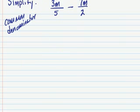In other words, I'm going to have to multiply 2 times this 5, and I'm going to have to multiply 5 times this 2. And when I do that, I'll get a common denominator of 10.